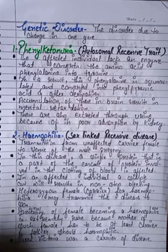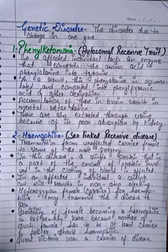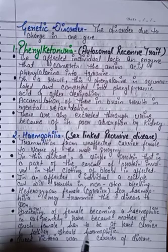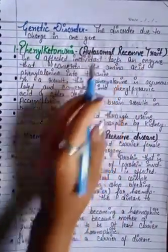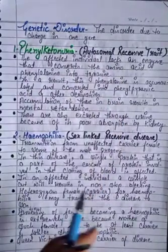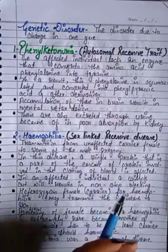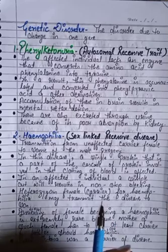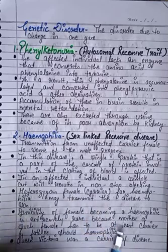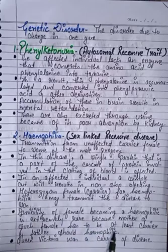Today we will study genetic disorders and chromosomal disorders. The first question is: what is a genetic disorder? A disorder due to a change in one gene is called a genetic disorder. When a mutation occurs in one gene, we call it a genetic disorder. The first example is phenylketonuria — it is an autosomal recessive trait.